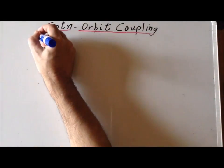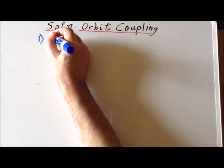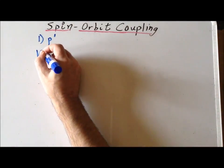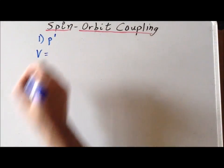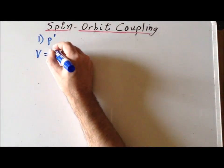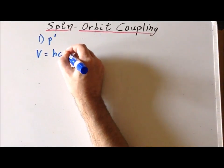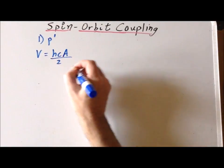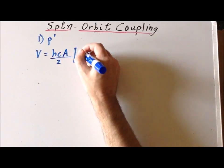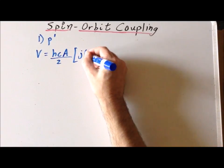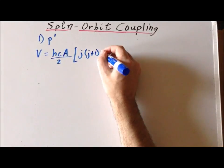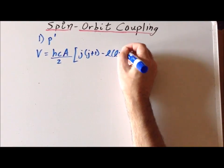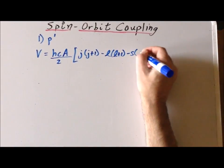Our first case is p1. Recall that our expression for the energy of the various levels is HCA, where A is the spin-orbit coupling constant, divided by 2, times J(J+1) minus L(L+1) minus S(S+1).